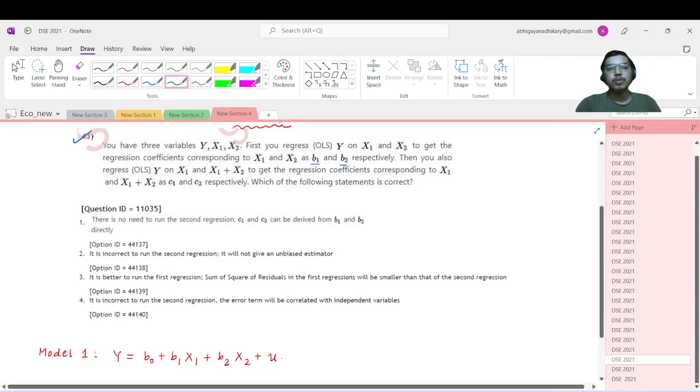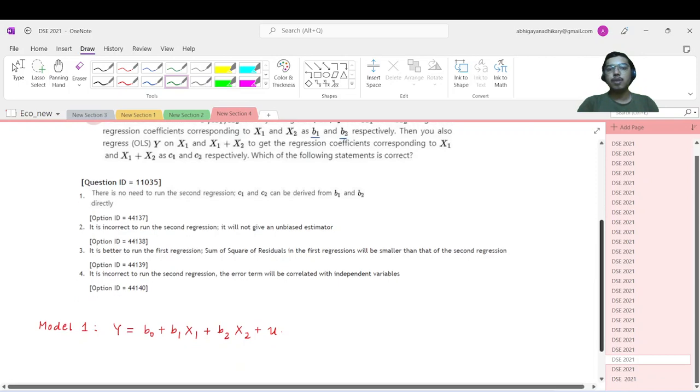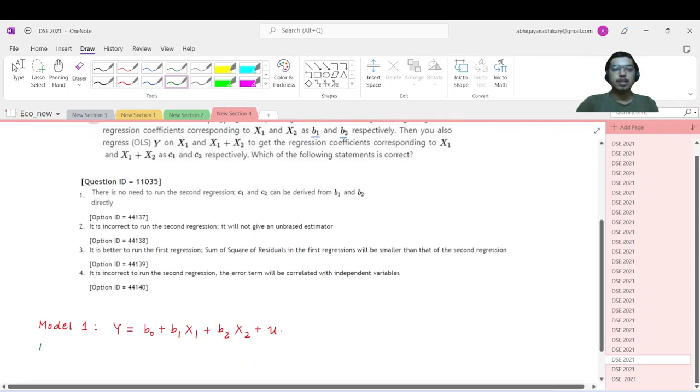Then you also regress using OLS y on x1 and x1 plus x2 to get the coefficients corresponding to x1 and x1 plus x2 as c1 and c2 respectively. Which of the following statements is correct? Therefore, Model 2 basically becomes y equals c0 plus c1 times x1 plus c2 times (x1 plus x2) plus error term v.